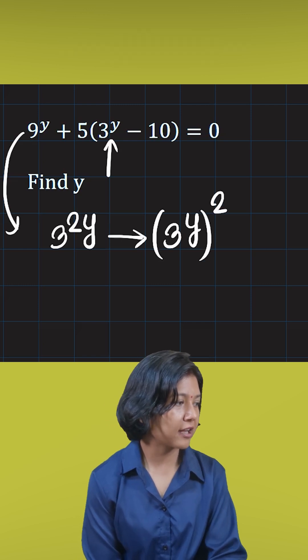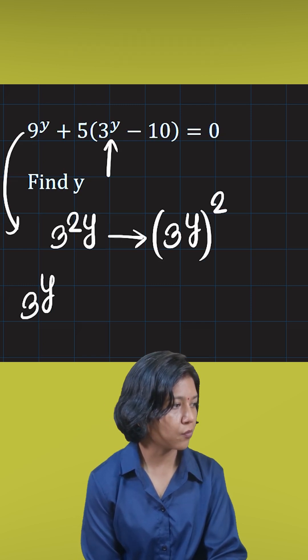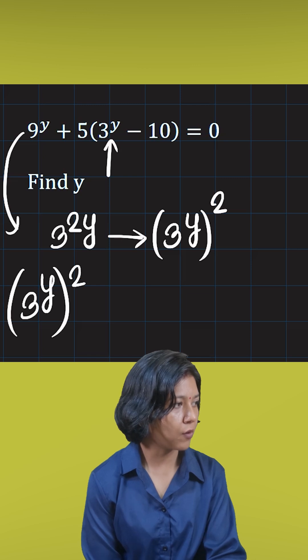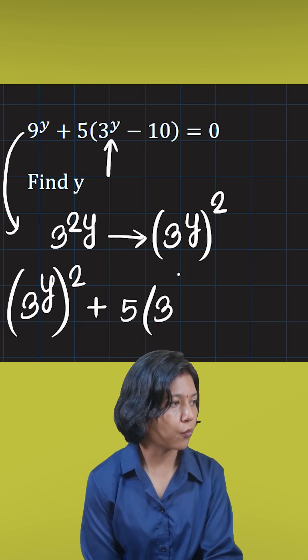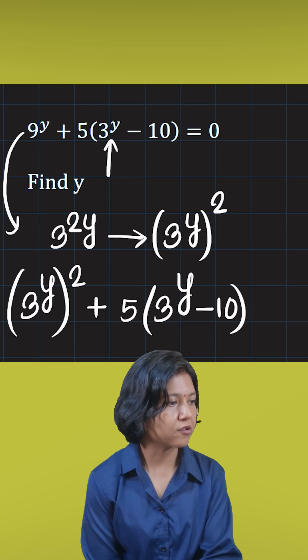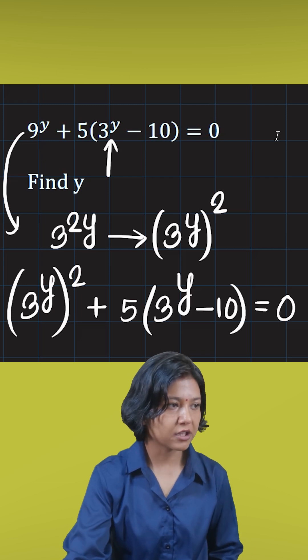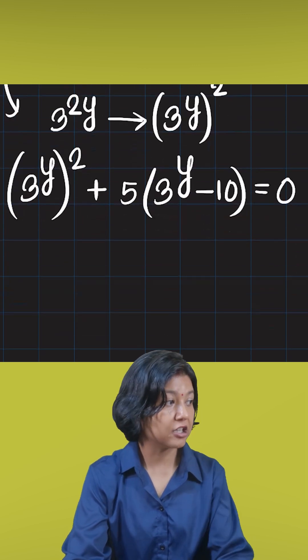If you do so, that is when you get a quadratic in terms of 3^y. So 3 to the power of y whole squared, plus 5 times 3 to the power of y, minus 10, equals 0. As soon as you do this, you realize what you have got is a quadratic in terms of this.